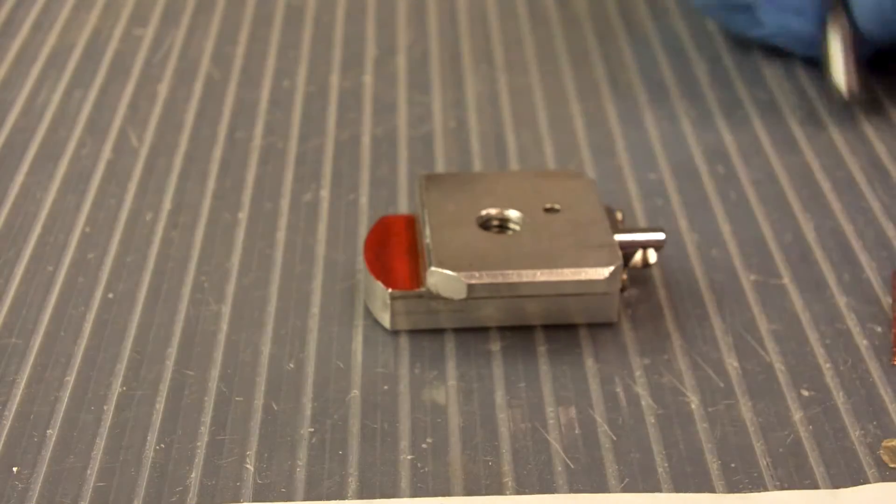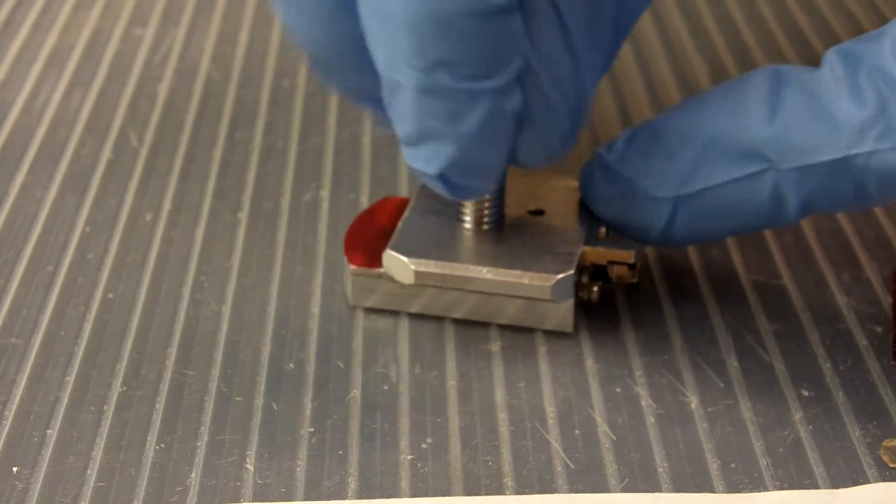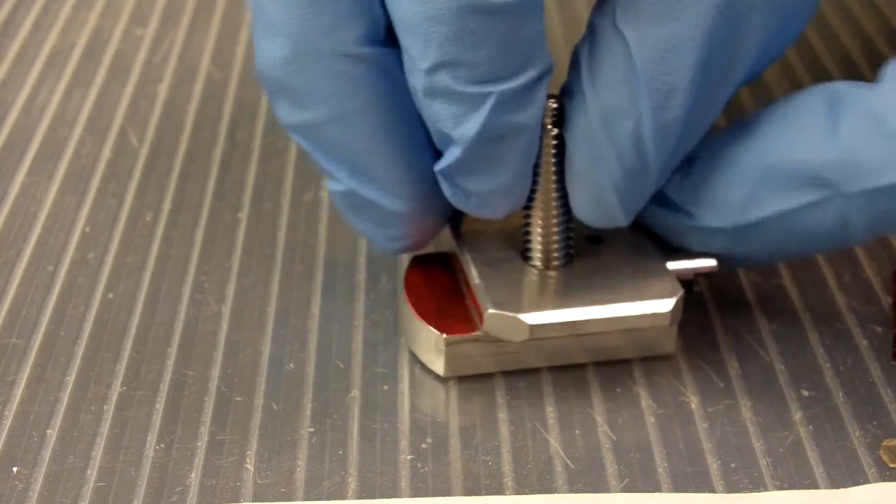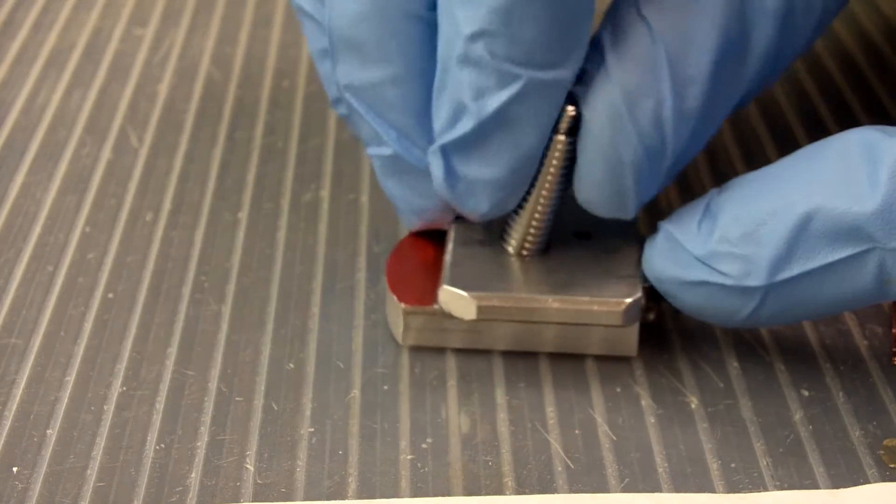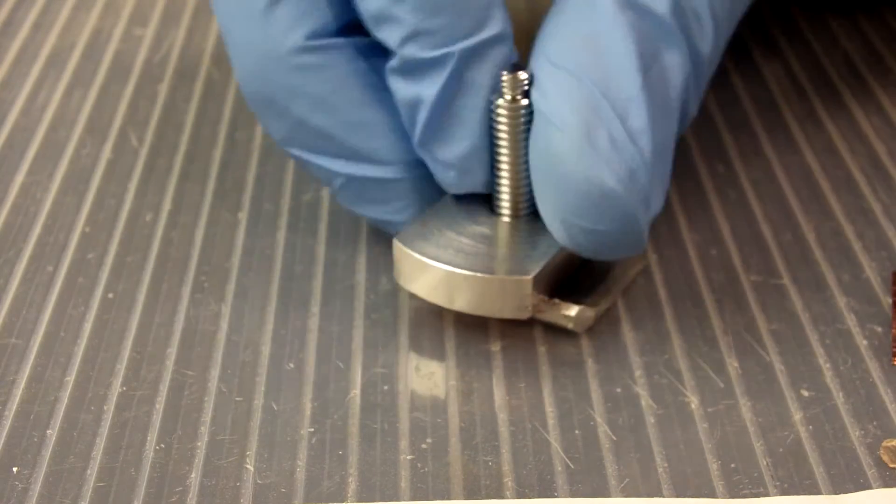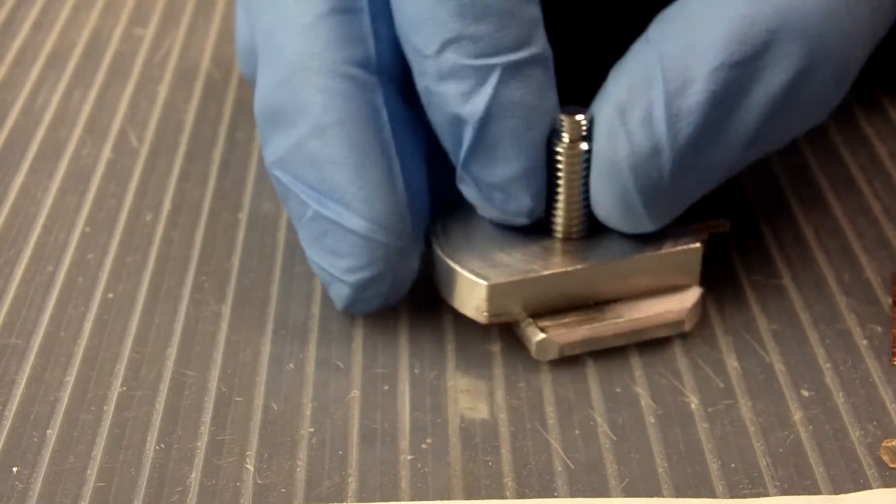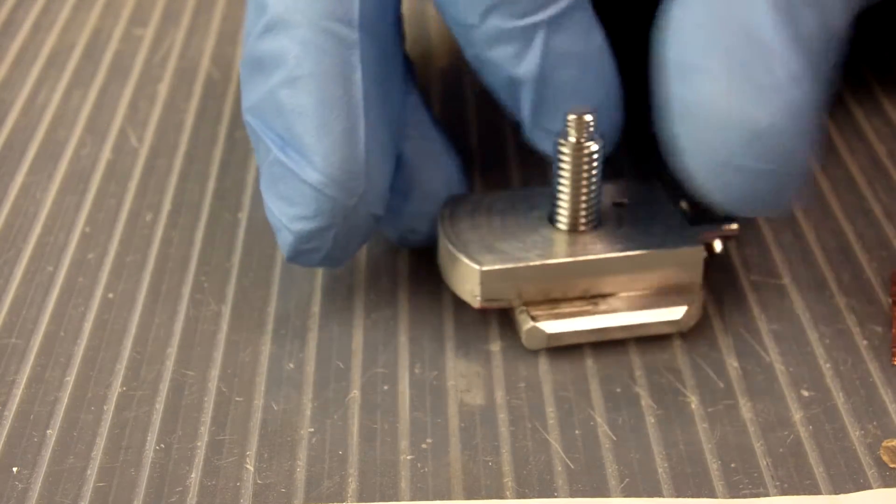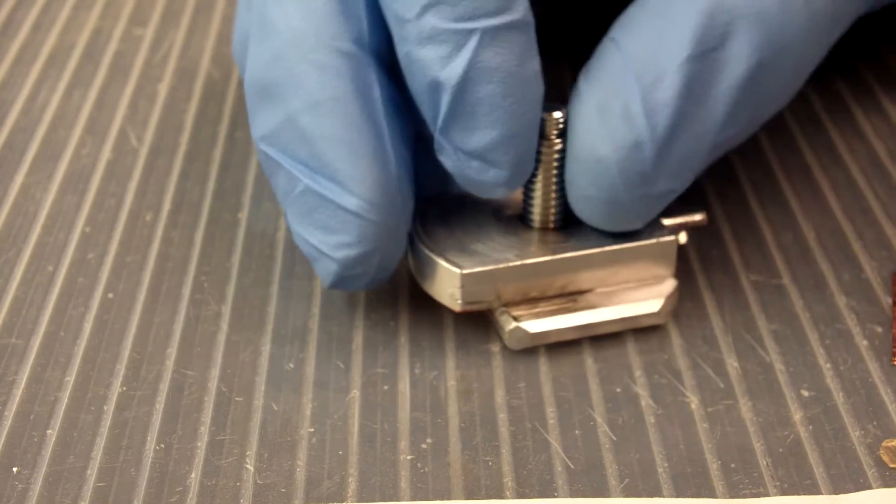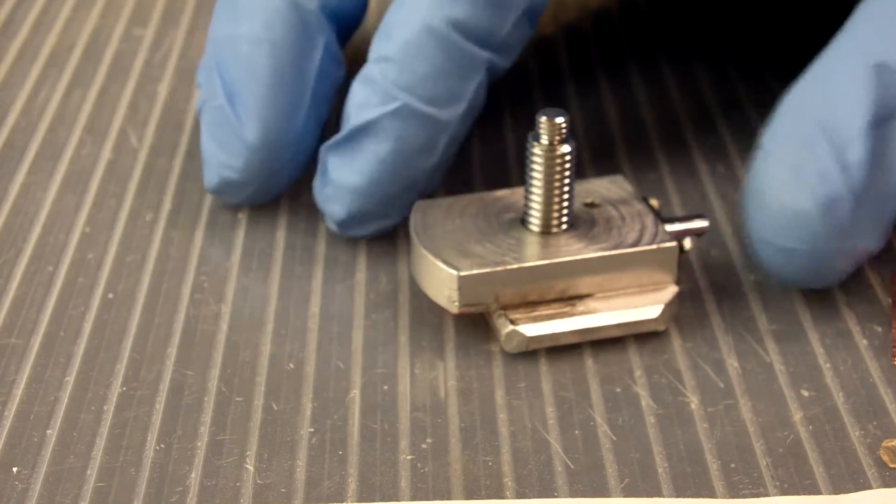This means that we cannot screw the screw in from the wrong side. Even though I've seen people try it really, really hard, it doesn't work. As a side note, this is a good rule to follow when you're using an electron microscope. If you're trying really, really hard to do something, it probably means you're doing something wrong. Physical operations like this should not be strenuous.